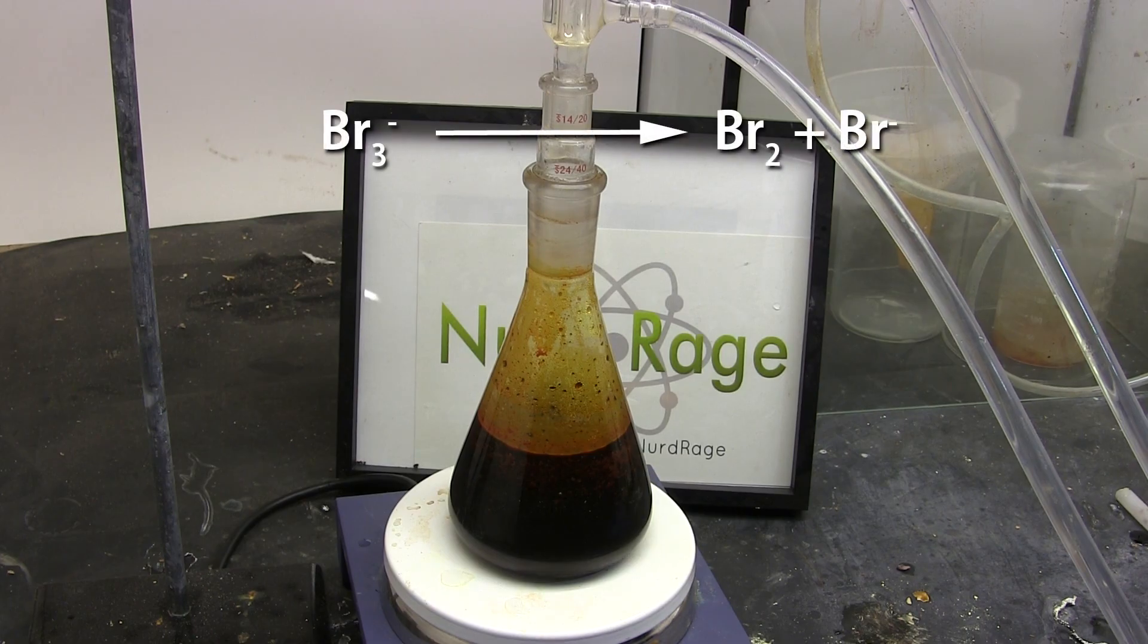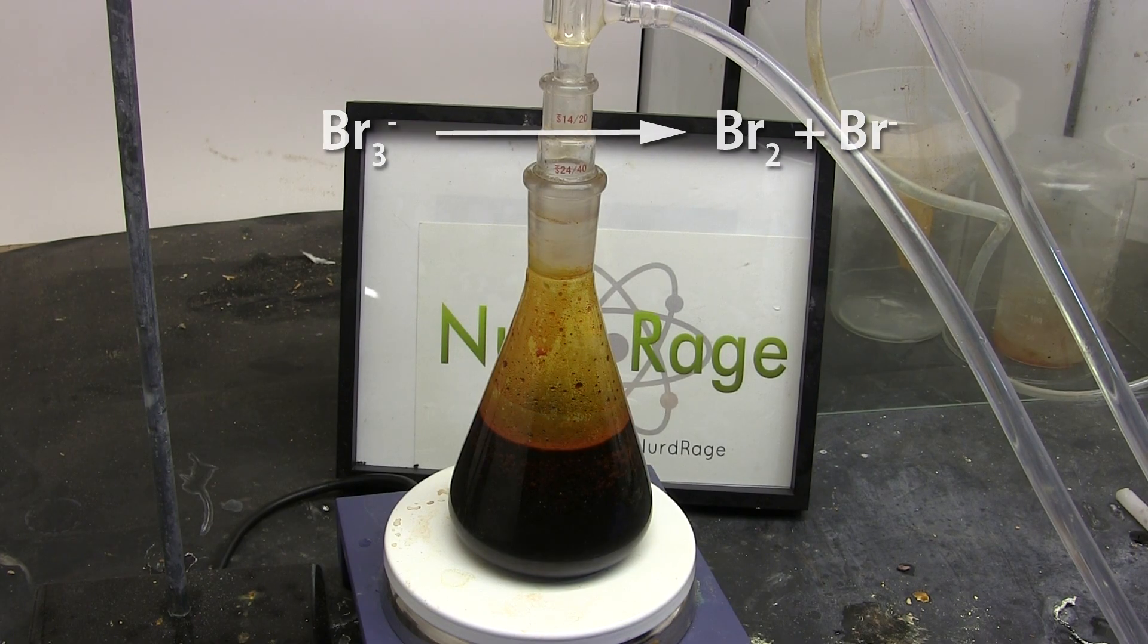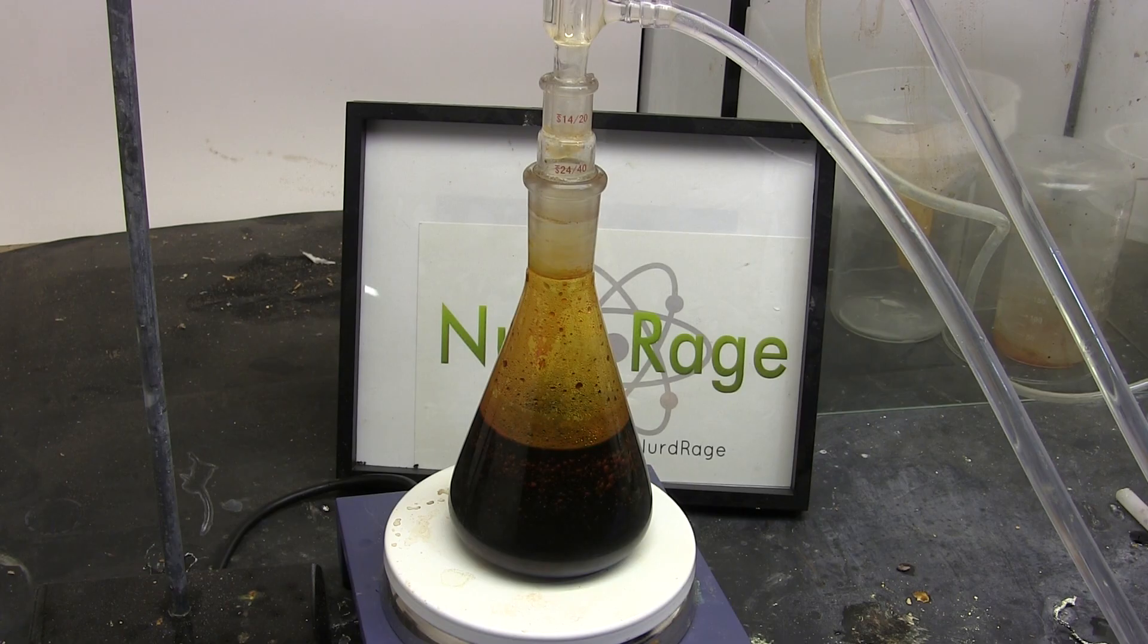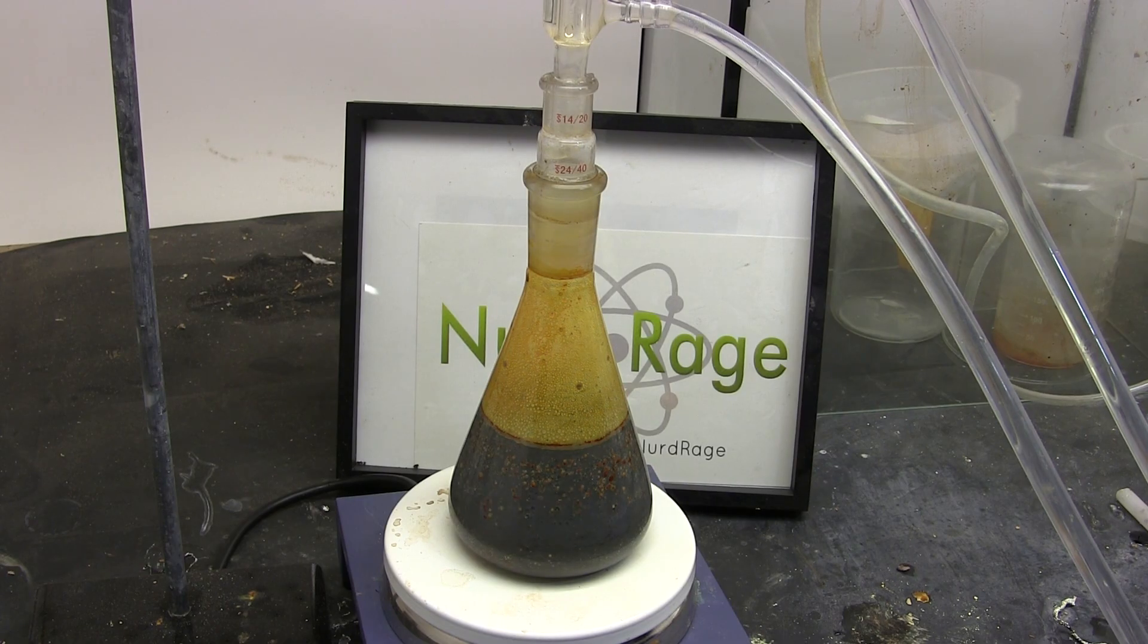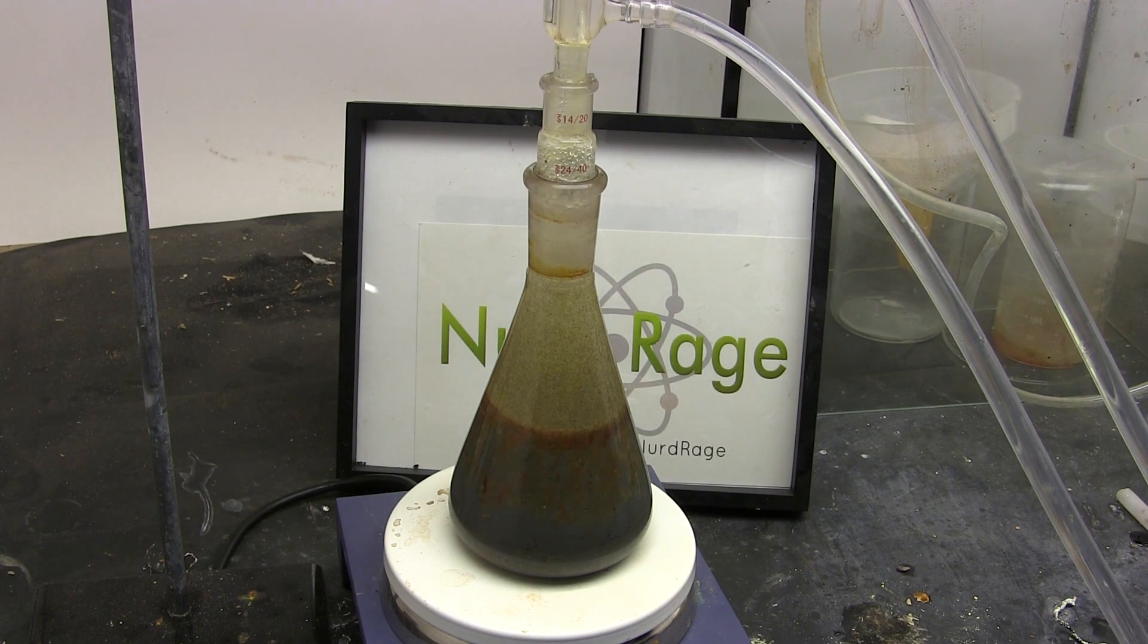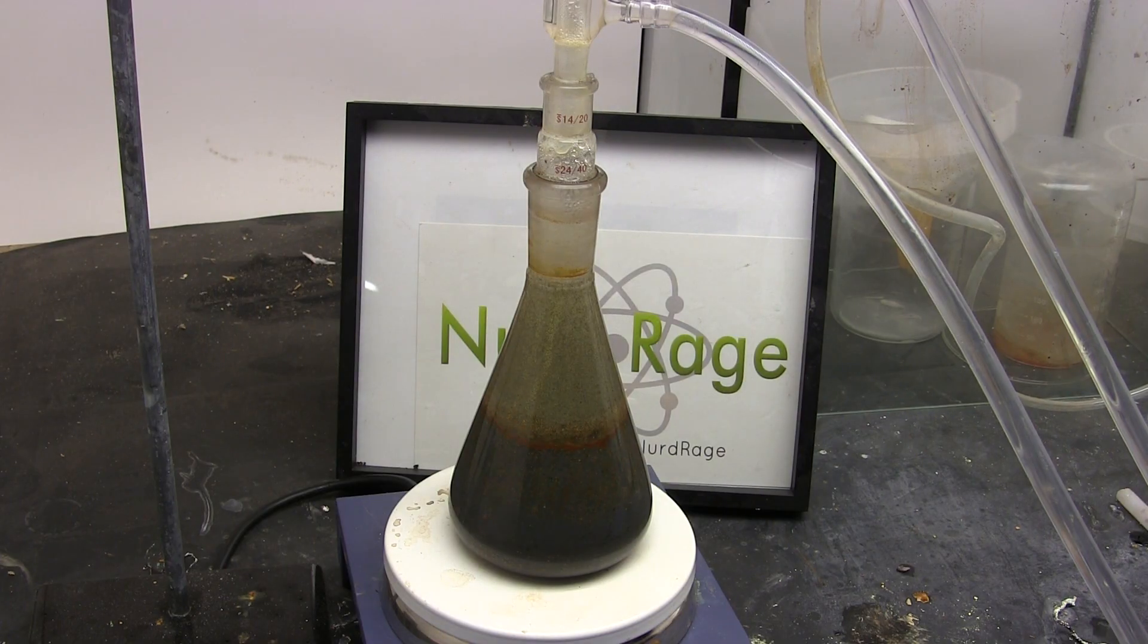What's happening here is that we're dissociating any remaining tribromide ions into bromine and bromide. We're also forcing any sulfur bromides to react with water and produce sulfuric acid. This reaction is very quick and you should only need to reflux for about half an hour to use up any remaining bromine.